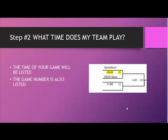Step 2: What time does my team play? The time of your game is listed between the two teams. You must be on time or risk forfeiting the game. The number for each game is also listed. In this example, for game 1, you would play at 10:45.